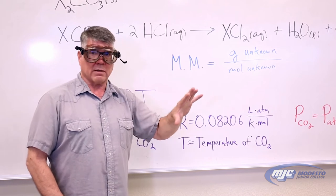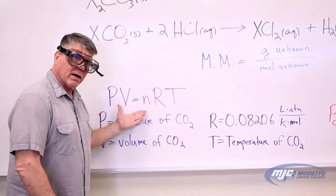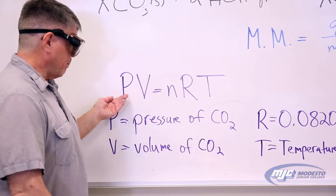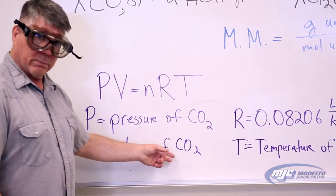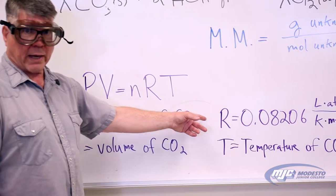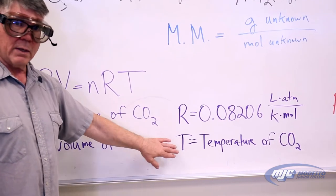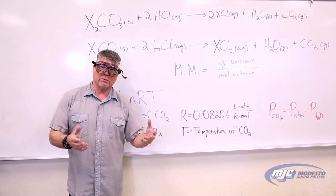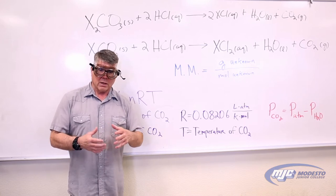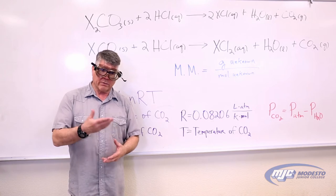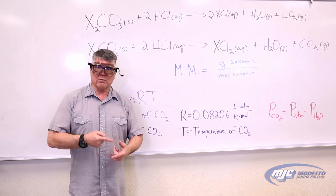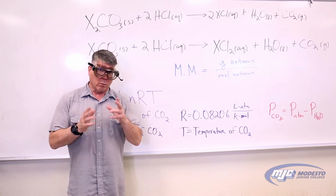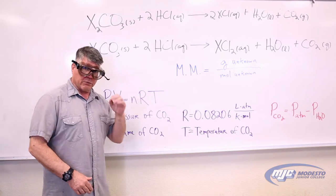I'm going to show you the apparatus in just a minute. The ideal gas law, PV = nRT, applies to the carbon dioxide gas given off. P is the pressure of the CO2 gas, V is the volume of CO2 given off, R is the gas constant — 0.08206 liters·atmospheres per Kelvin·mole — and T is the temperature of the CO2 in Kelvin. There's one twist: where the CO2 is collected, it will be on top of water, and water molecules evaporate and mix in with the CO2, contributing to the pressure inside the container.